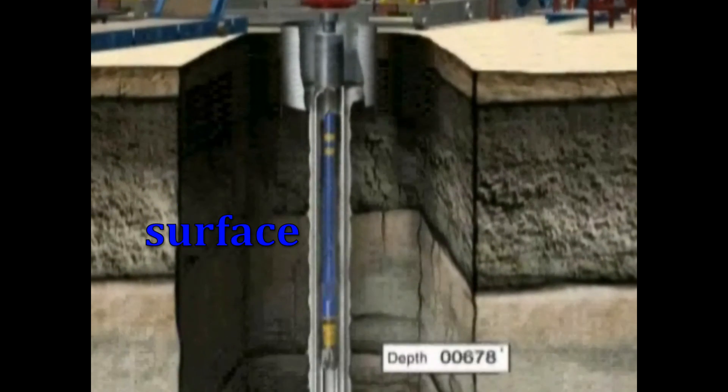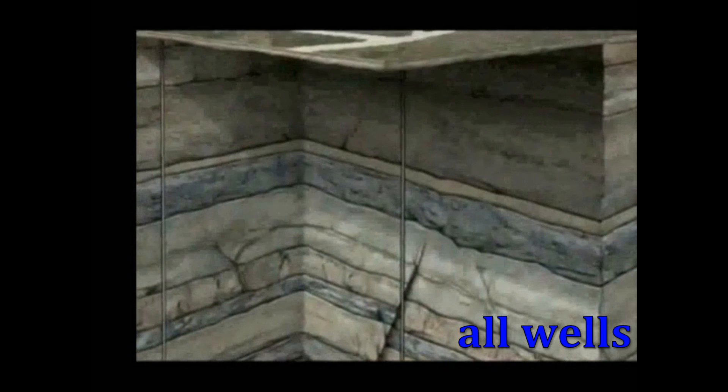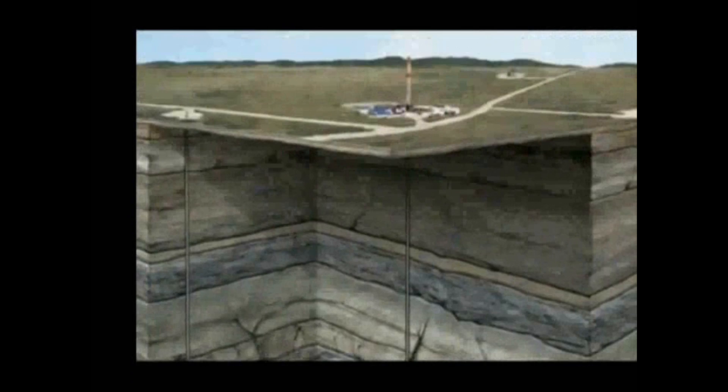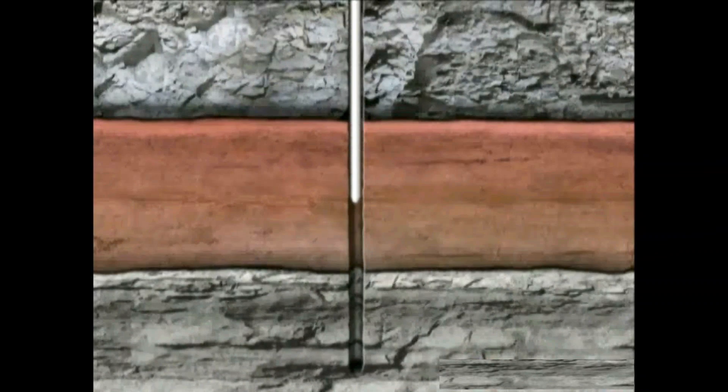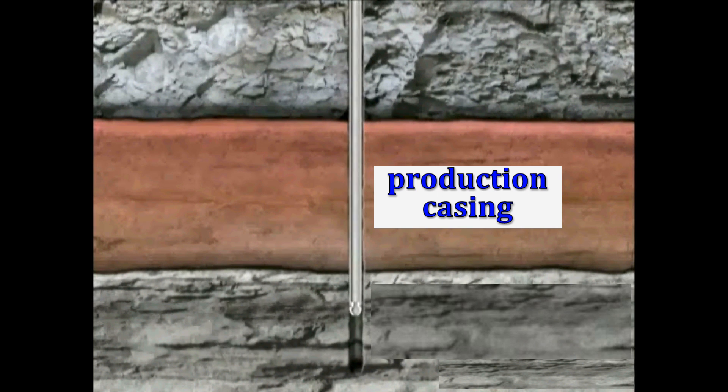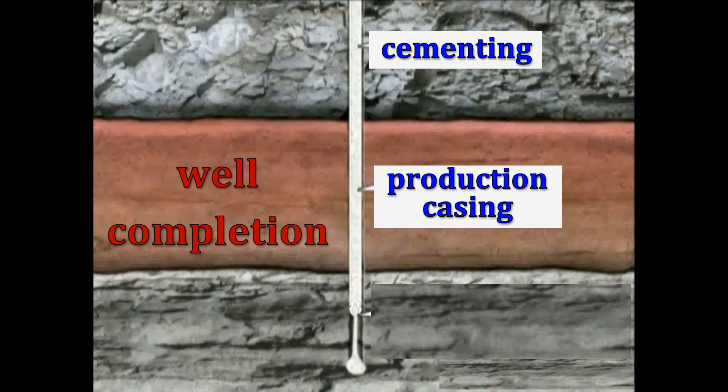Surface and, if needed, intermediate casing strings are installed during drilling on all wells regardless of whether they are commercially viable or not. Production casing strings, on the other hand, are only run when the well shows promise of becoming a producing oil well. Running and cementing these casing segments are a part of the first steps in well completion.